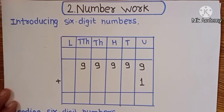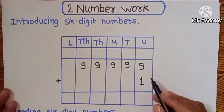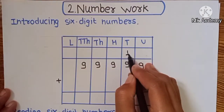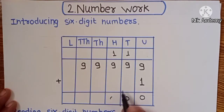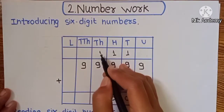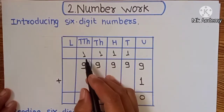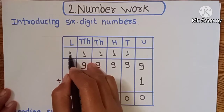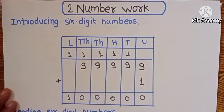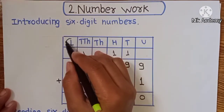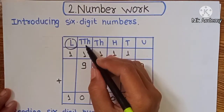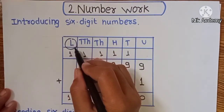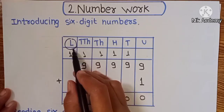Now, 99,999 — if we add 1 to this number, then we get: 9 plus 1 is 10, carry 1; again 9 plus 1 is 10, carry 1; again 9 plus 1 is 10, carry 1. Here carry means add to the left side of the 10,000 place — a new place is added. This is called lakh. So on the left side of 10,000, this new place is called lakh.